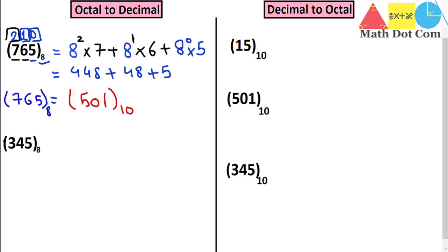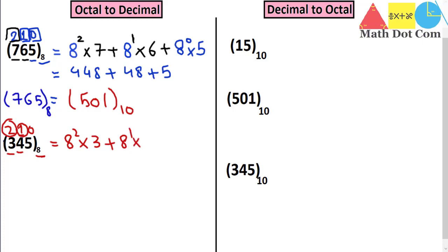Similarly, we apply the same approach to the next number: octal 345. The digits are at locations 0, 1, and 2. Since the base is 8, we write: 8 squared multiplied by 3, plus 8 to the power 1 multiplied by 4, plus 8 to the power 0 multiplied by 5.